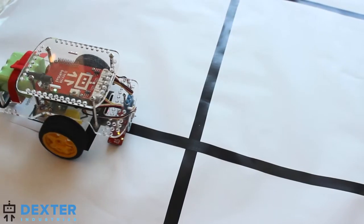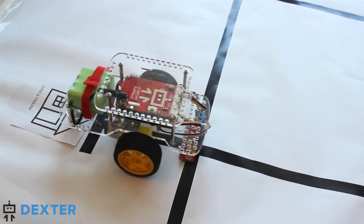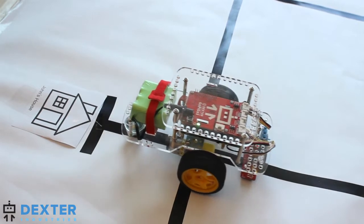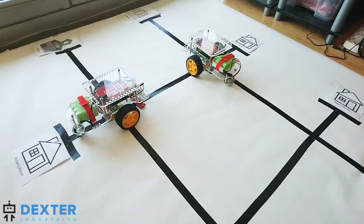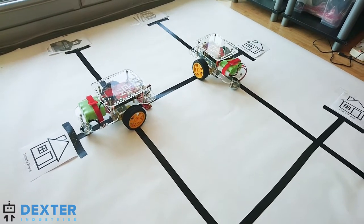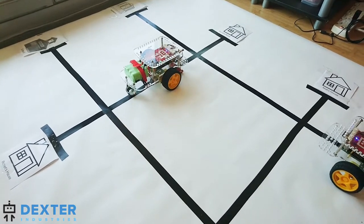In the first step, we build a function to handle intersections. Our road is made of electrical tape the robot can follow with the line follower. I printed off a few houses and destinations I might want my self-driving car to go to.